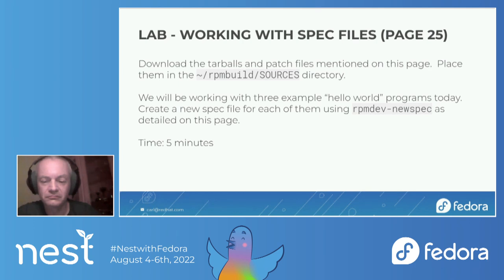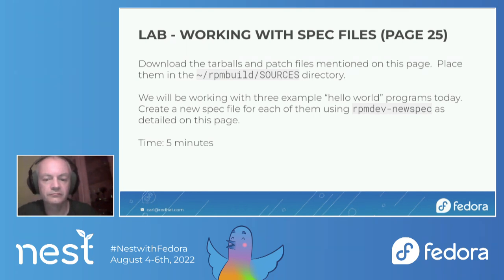Mark asked why not use %autosetup. Auto setup is great if you know you're going to apply all your patches. But if you need granularity — say you only want to apply a particular patch on a specific architecture, or you're sharing a spec file between Fedora and RHEL and only want a patch on RHEL — that's a case where you'd use %setup with conditionals around the patch application lines. For these labs, we stick with %setup for consistency with the PDF.